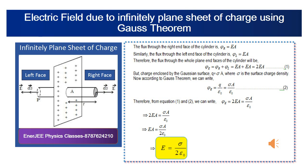The Gaussian surface has cross-sectional area A and length 2R. Since the electric field lines are always parallel to the curved surface of the cylinder, the flux through the curved surface is always zero. Therefore, we calculate the total flux only through the left and right plane ends.